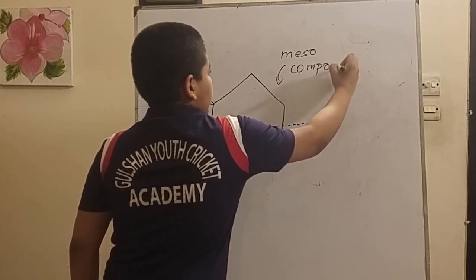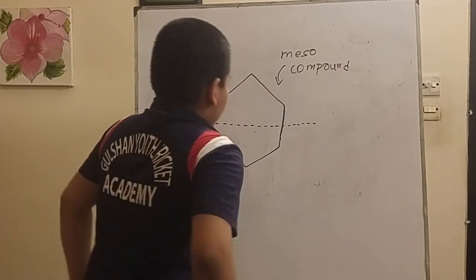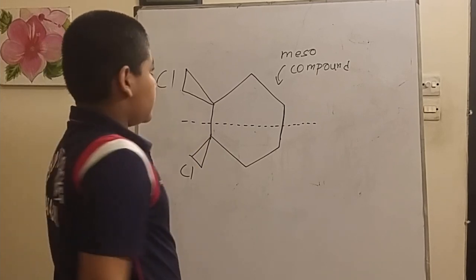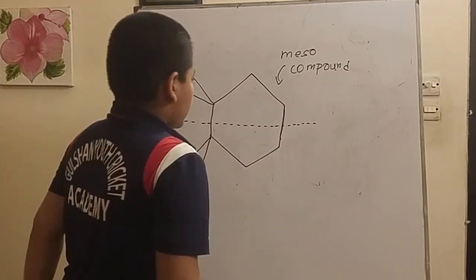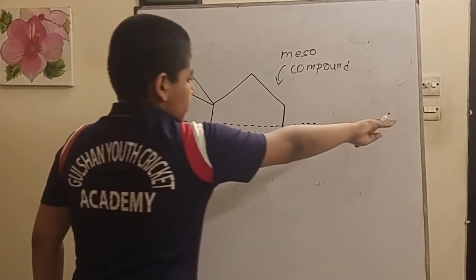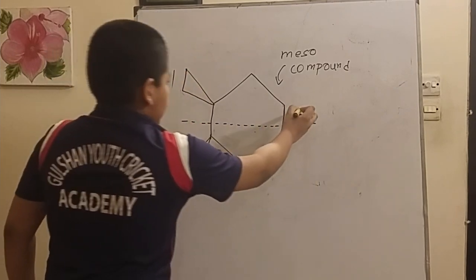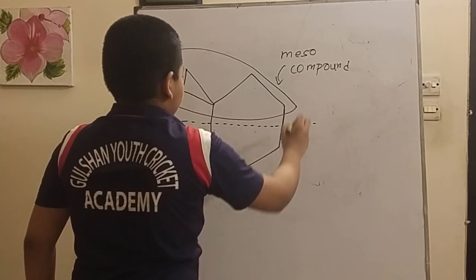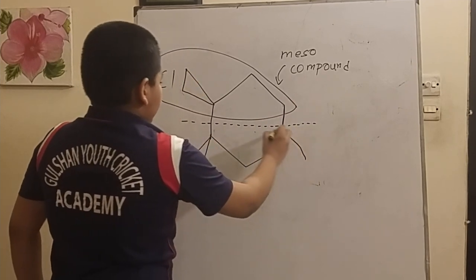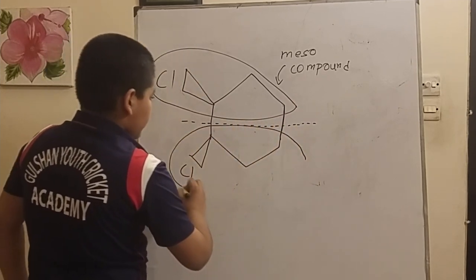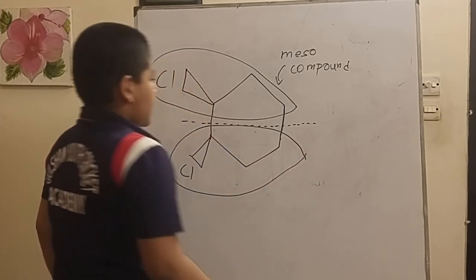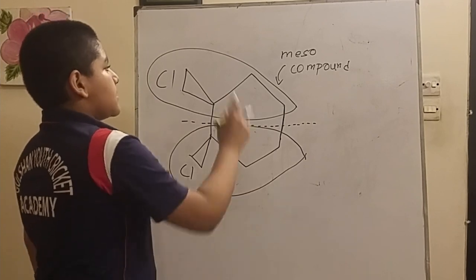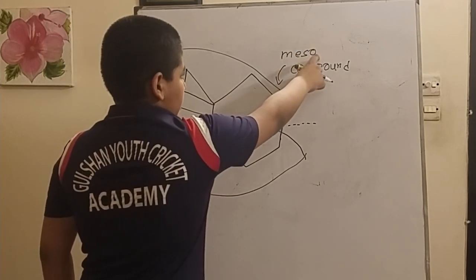A meso compound is where there is an internal plane or line of symmetry. If we split the molecule here, we can see that this portion is very similar to this portion. It's called the line of symmetry, so this is a meso compound.